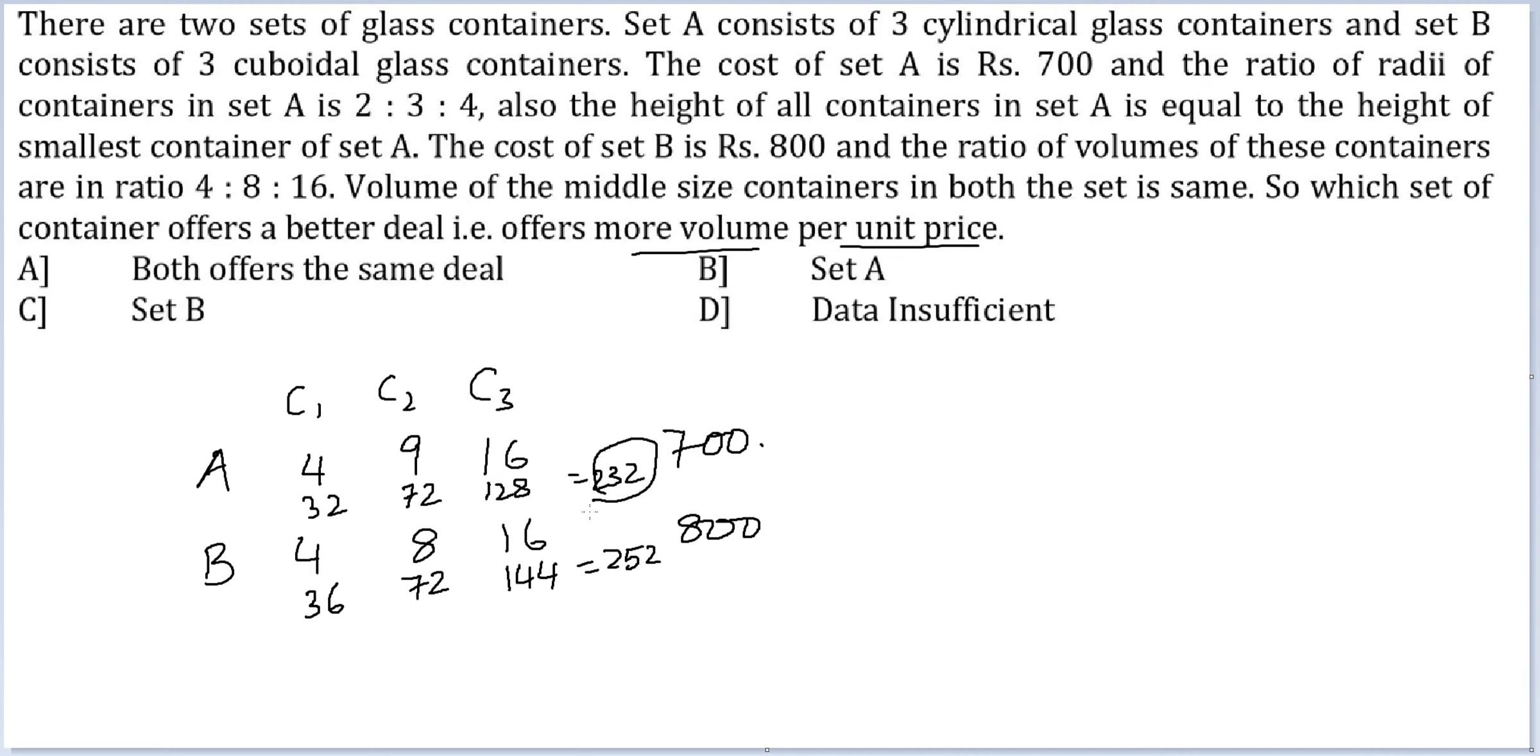So in ratio terms, the volume that you are getting in the containers of A and the volume in the containers of B. So these are 232 is to 252.